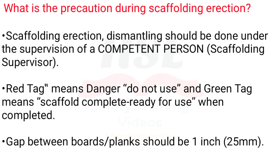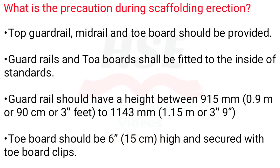What are precautions during scaffolding erection? Scaffolding erection and dismantling should be done under the supervision of a competent person — a scaffolding supervisor. Red tag means danger, do not use; green tag means scaffold is complete and ready for use. Gap between boards and planks should be 1 inch. Top guard rail, mid rail, and toe boards should be provided, fitted to the inside of standards.